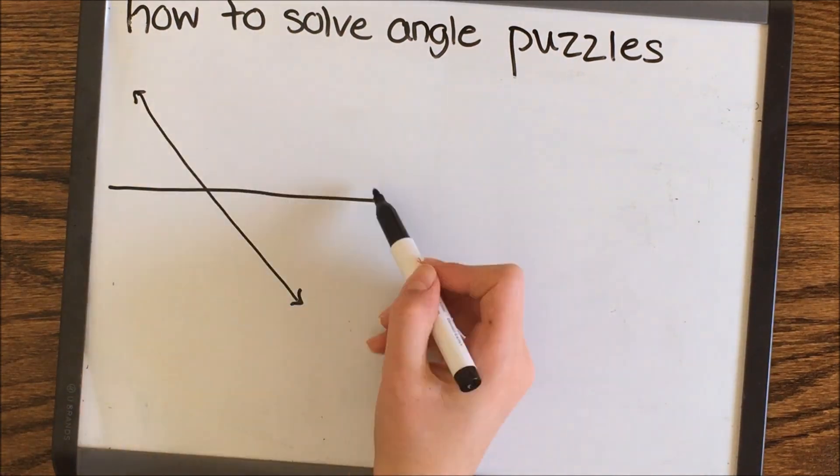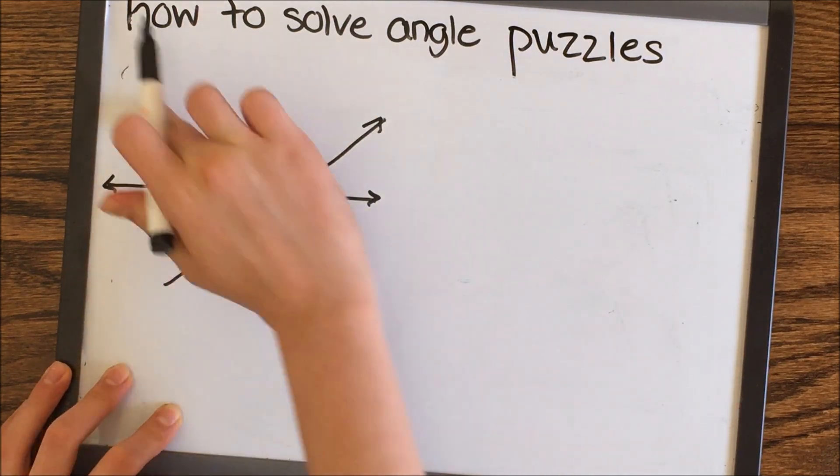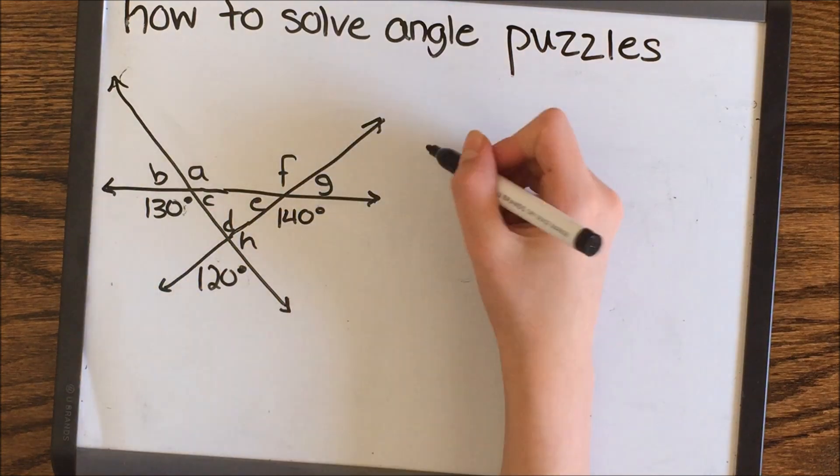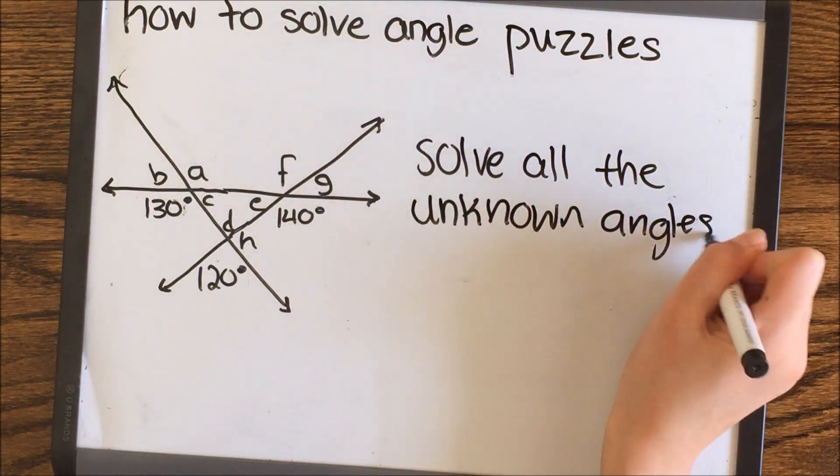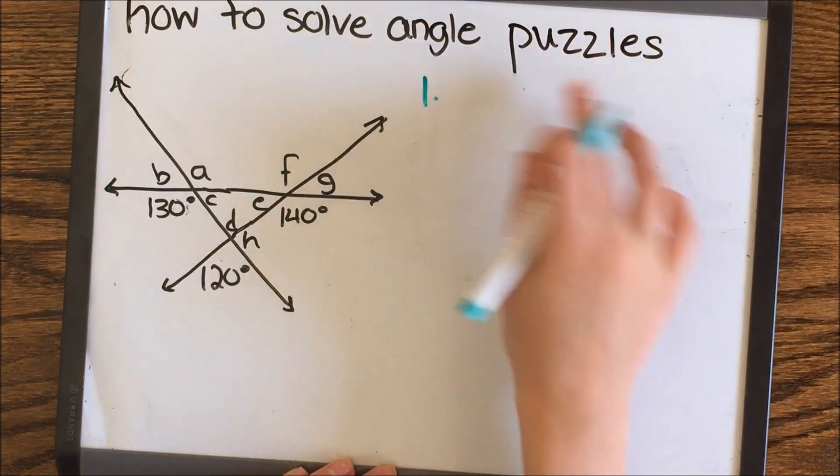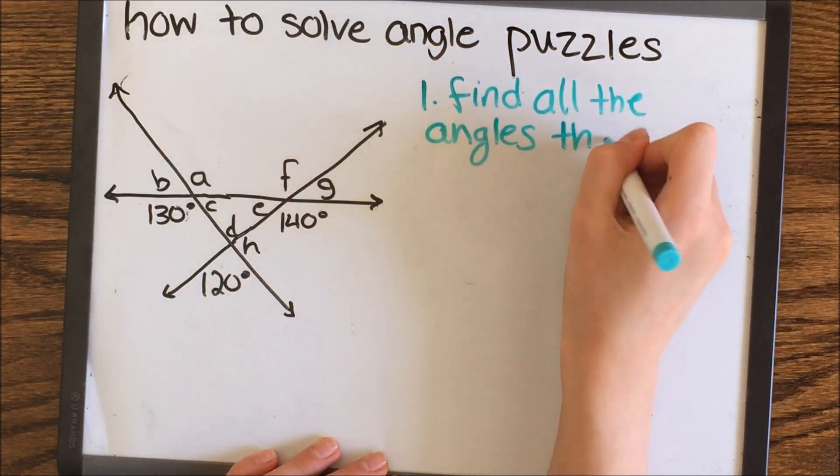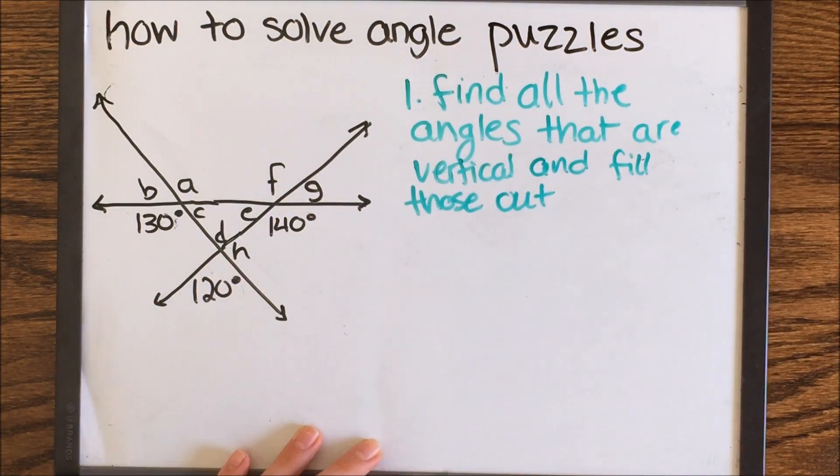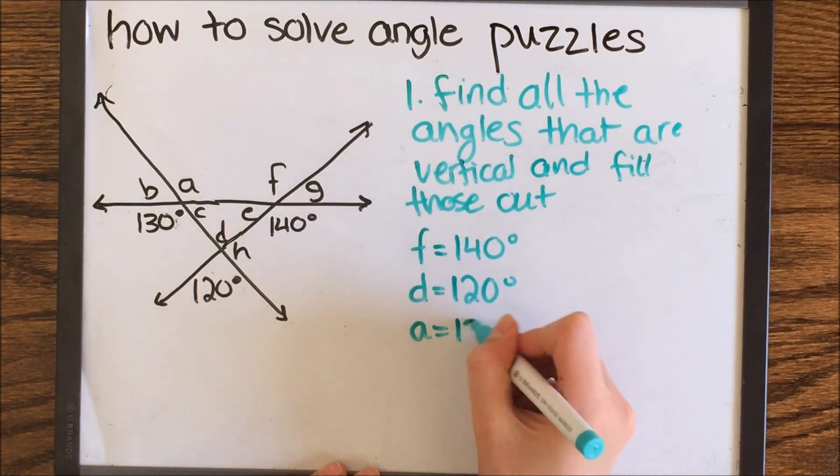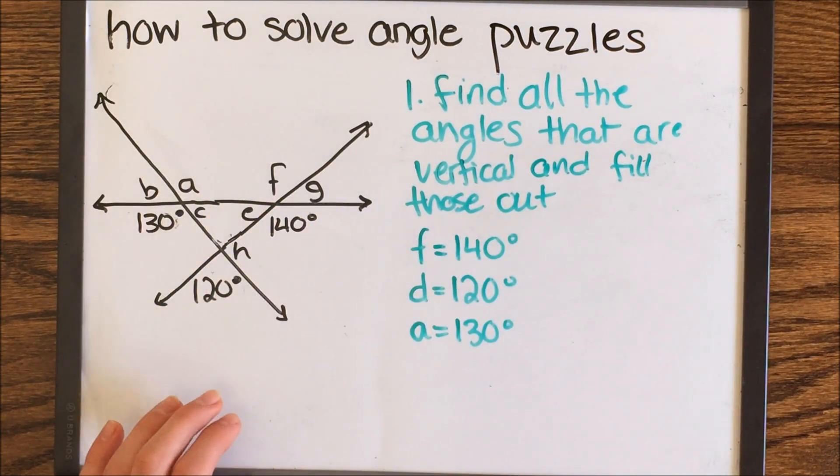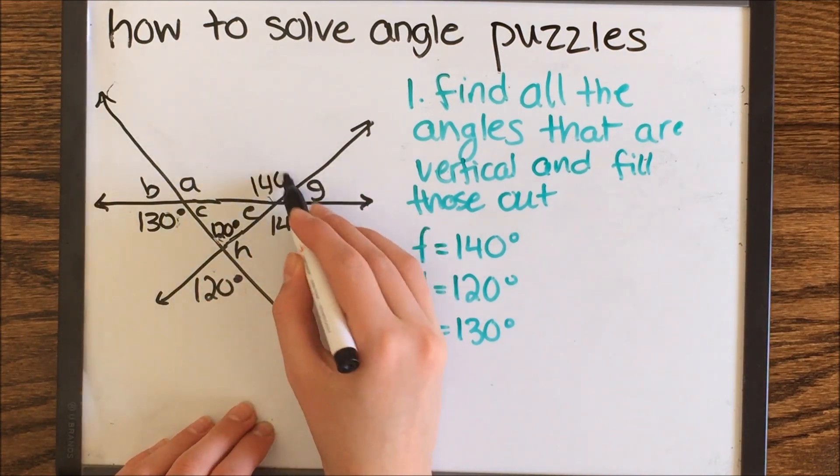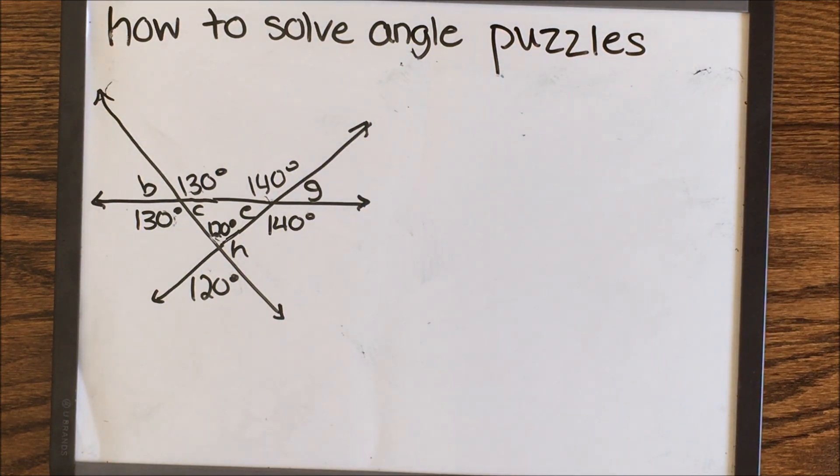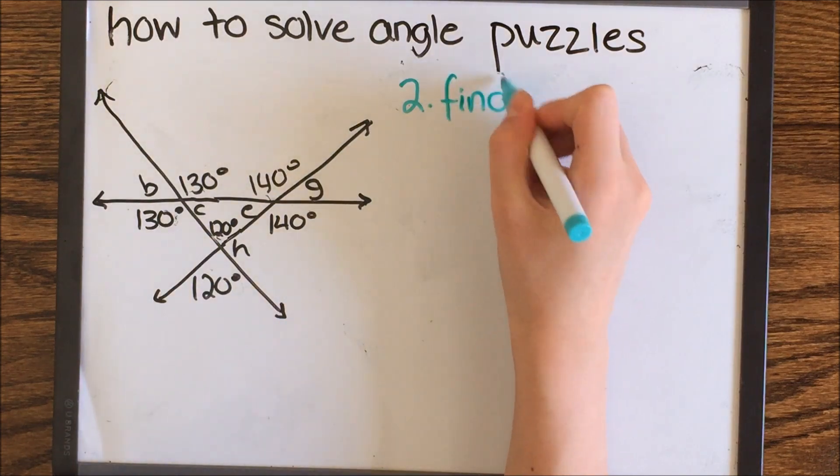This next puzzle I'm going to show you is a little bit more complicated and includes both supplementary and vertical angles. What we need to do is solve all the unknown angles. The first step is to find all the angles that are vertical and fill those out. Find all the angles that are easy to find out and that you can solve by just looking at them. They're basically just angles that are away from the angles that you already know.